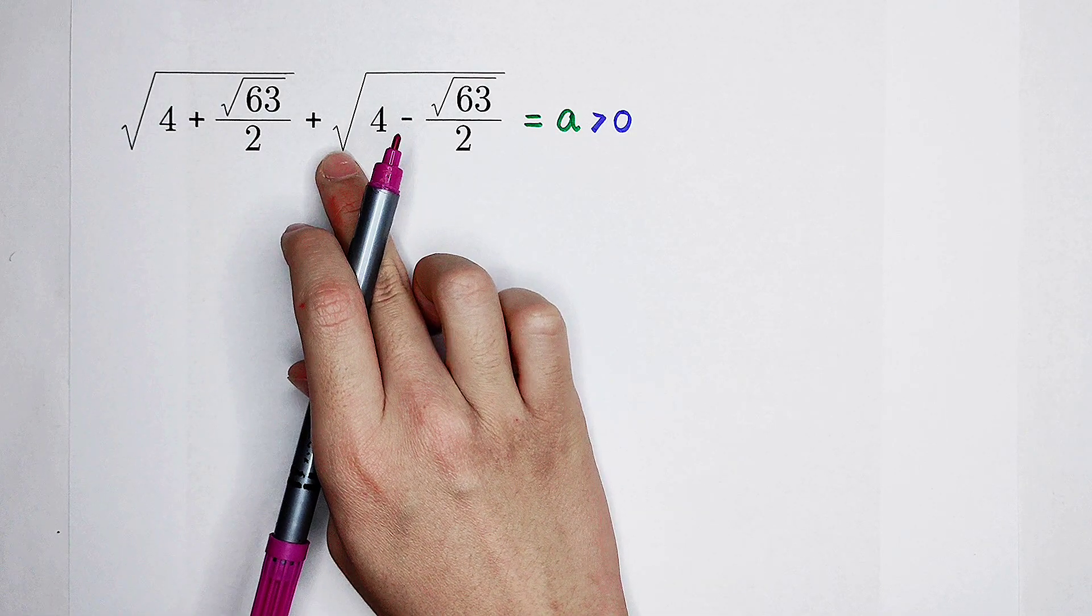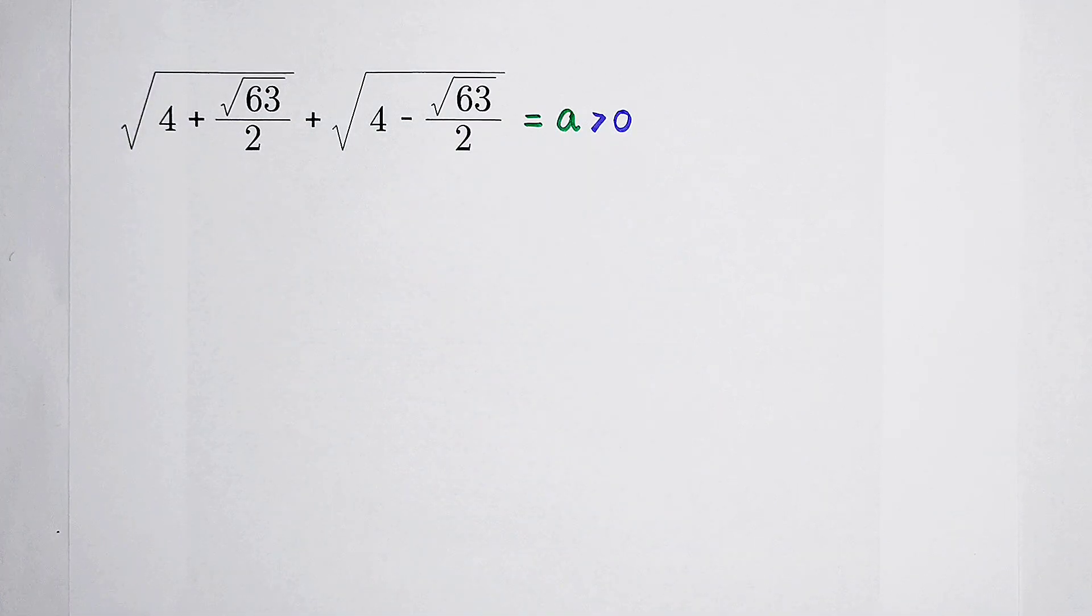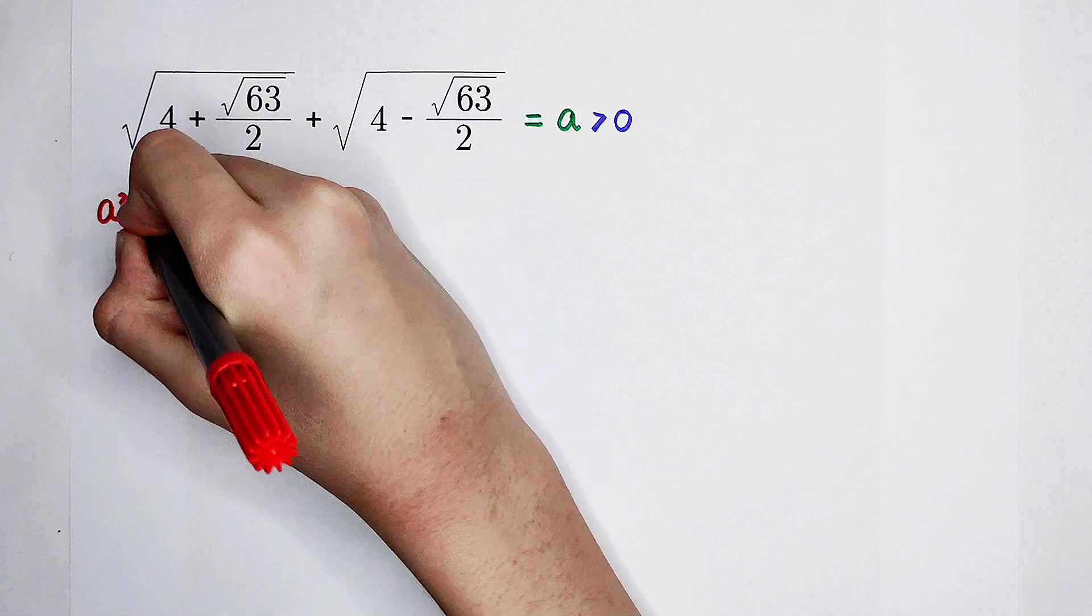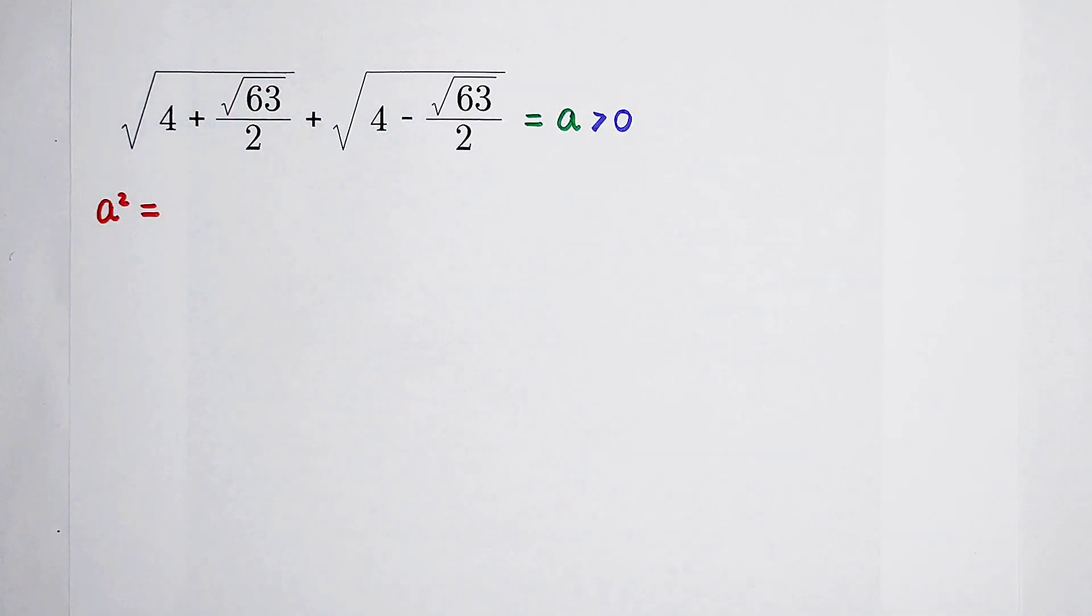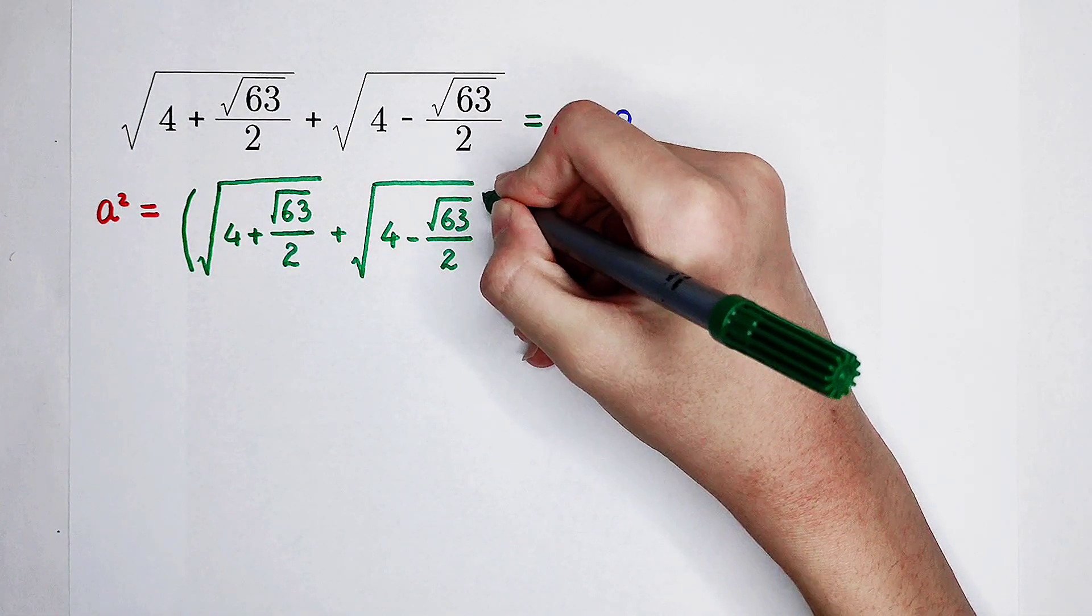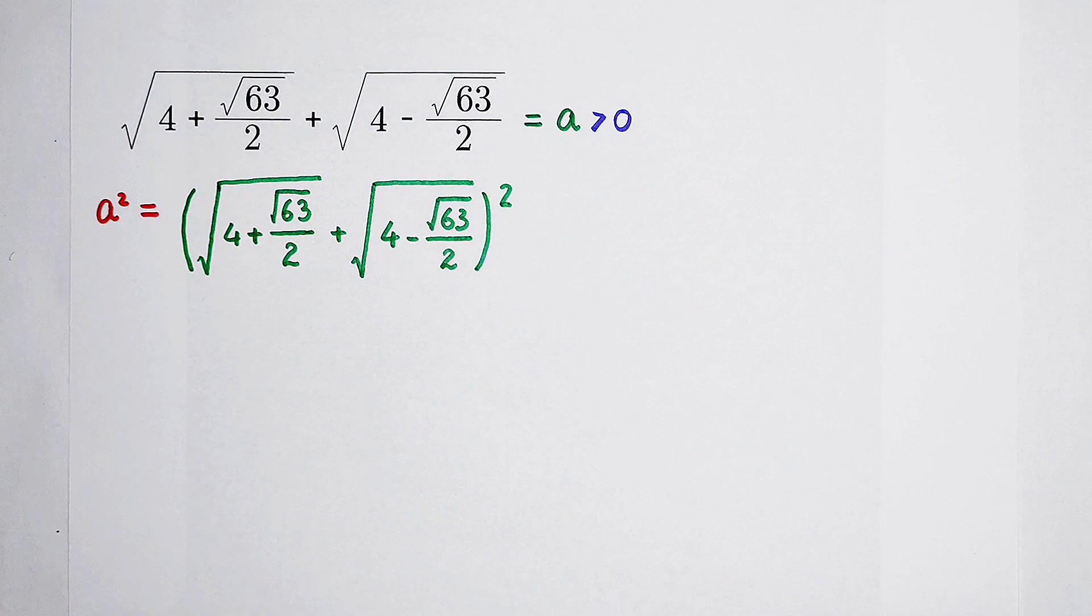Two square roots, two huge square roots. We cannot bear it. So now, our first step is to square on both sides. As our first step, I would like to calculate the value of a squared. Why? Because it is convenient. It is this huge guy squared. A squared, and then all squared. That is it.